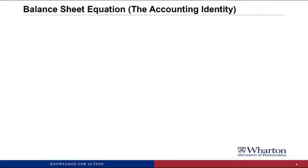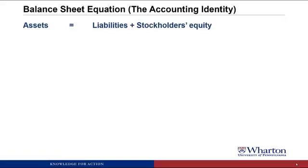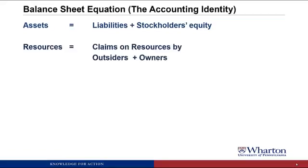If you've ever tried to learn a foreign language, you know that one of the most difficult things is learning all the rules of grammar — all the cases and declensions and changes in verb endings. Well, the good news about learning the language of accounting is that there's only one rule of grammar: the balance sheet equation, or the accounting identity. This is that assets equal liabilities plus stockholders' equity at all points in time. Another way to say this is that the resources of the company equal the claims on those resources by outsiders and by owners.